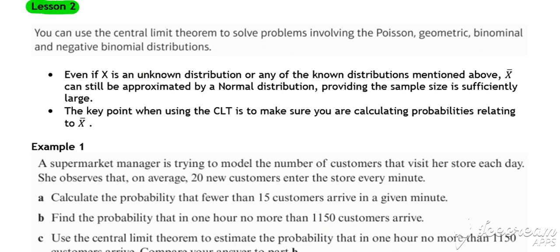In lesson two, we're going to look at situations where the original distribution might start as one of our known distributions, so a Poisson or a geometric, a binomial, or a negative binomial distribution, or sometimes another unknown distribution.